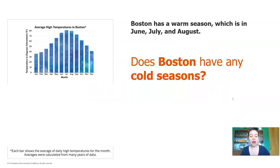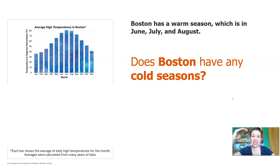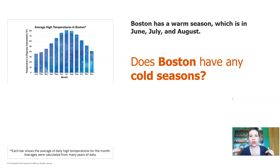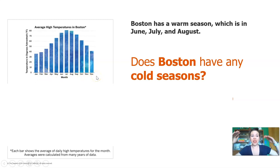Let's start with Boston. Boston is the city in Massachusetts that Toby moved from. Boston has a warm season in June, July, and August — let's take a look at the graph. Do you see June, July, and August? Their bars are higher than the rest of the months, so we can tell that is the warm season. Does Boston have any cold seasons? January, February, and March all look pretty cold, and over here in November and December we're seeing those lower temperatures. So Boston does have cold seasons — cold seasons and warm seasons.